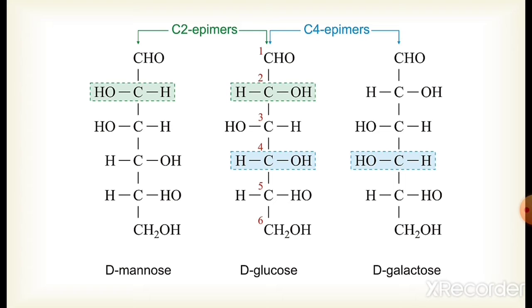Now look at this figure. In this figure, the centrally placed linear structure of glucose is shown, having the chemical formula C₆H₁₂O₆. The left and right side compounds are its epimers. The left side compound, mannose, differs only at carbon number 2 from glucose. That is why it is the C2 epimer of glucose.